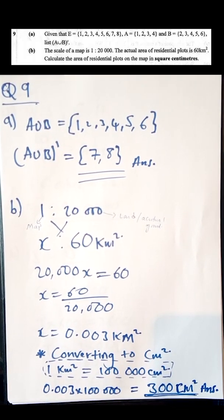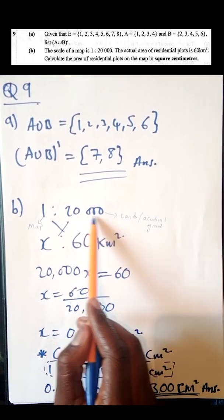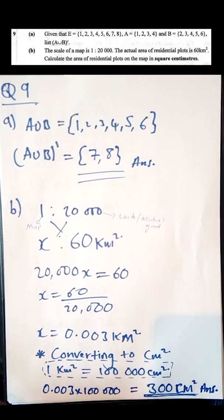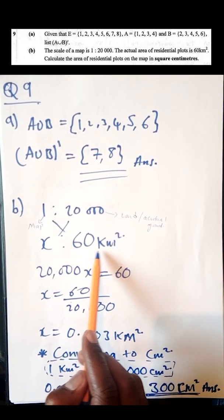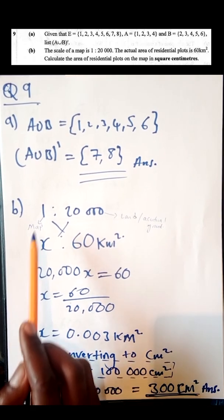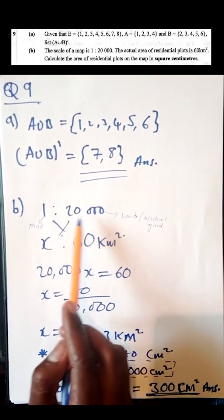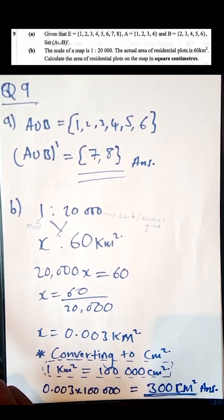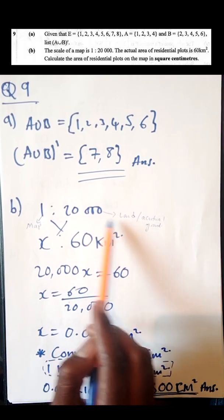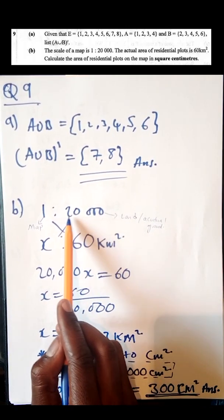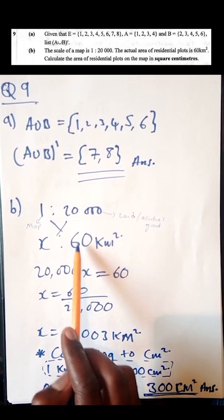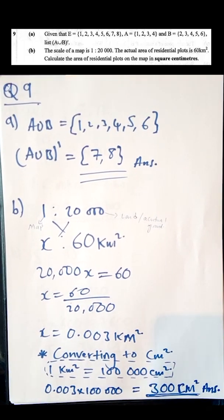The key tip for scale drawing: the number on the left side represents the map, and the number on the right side represents the actual ground. So on the ground where you have 20,000, on the map it is represented as 1. We are asked: if the ground area is 60 km², what is the map area?